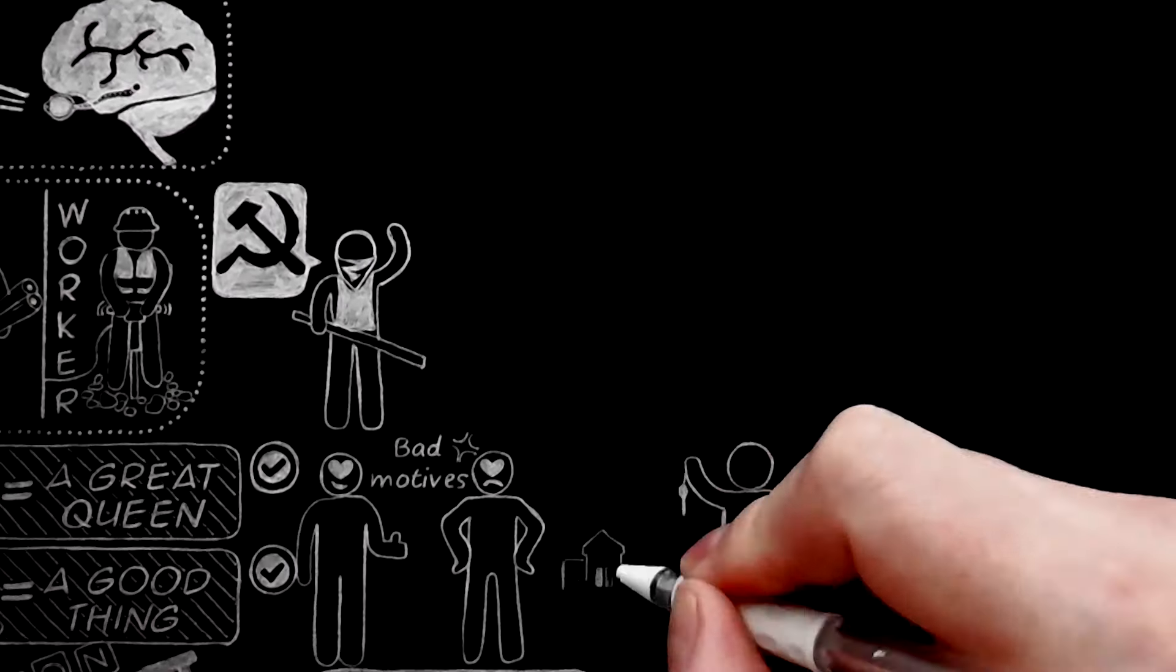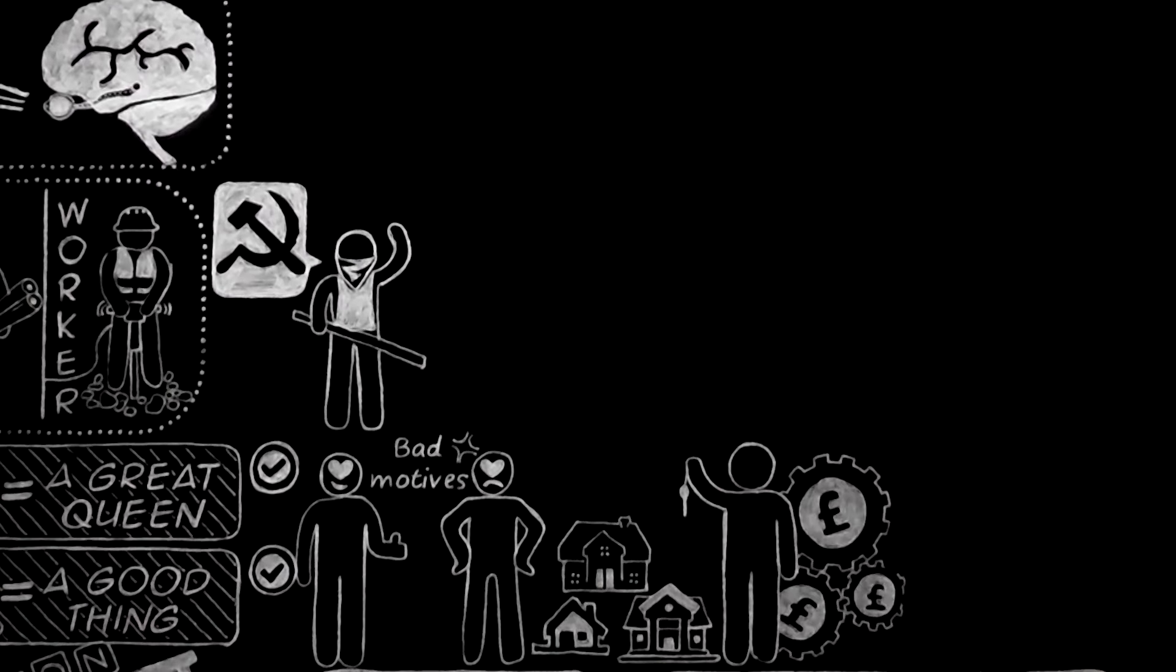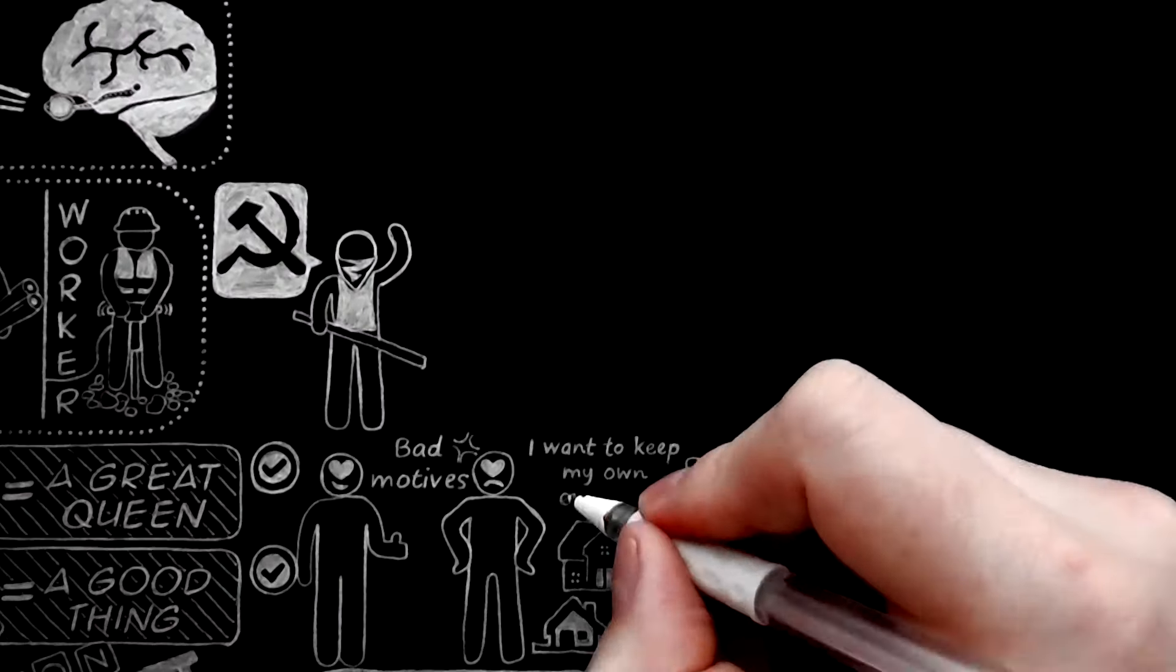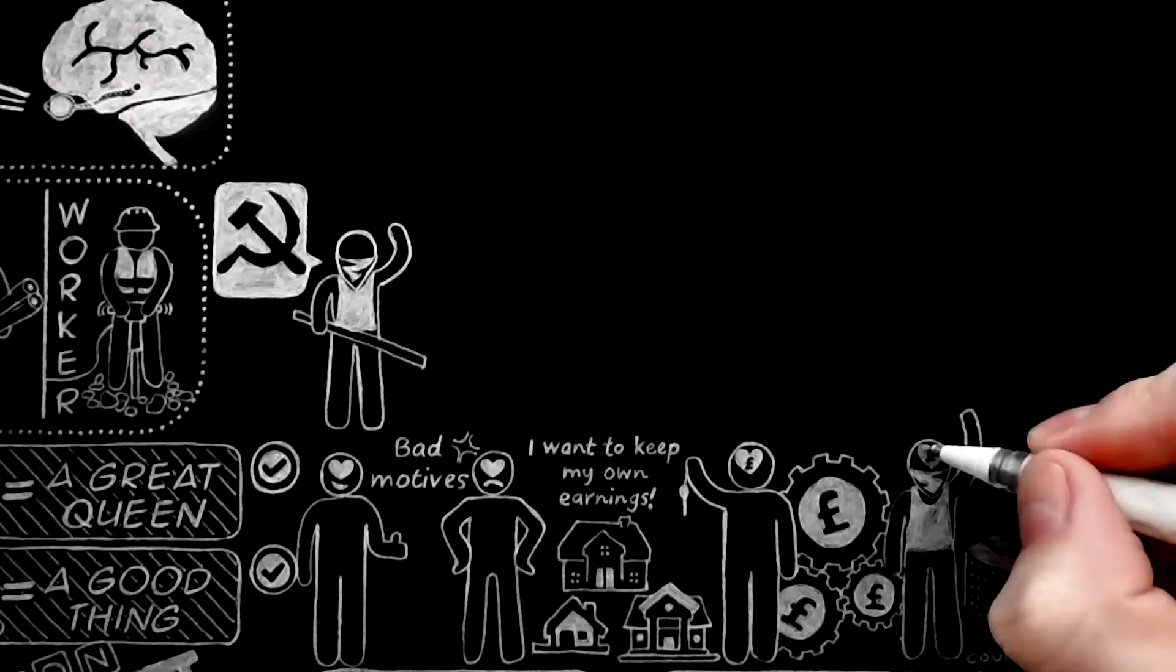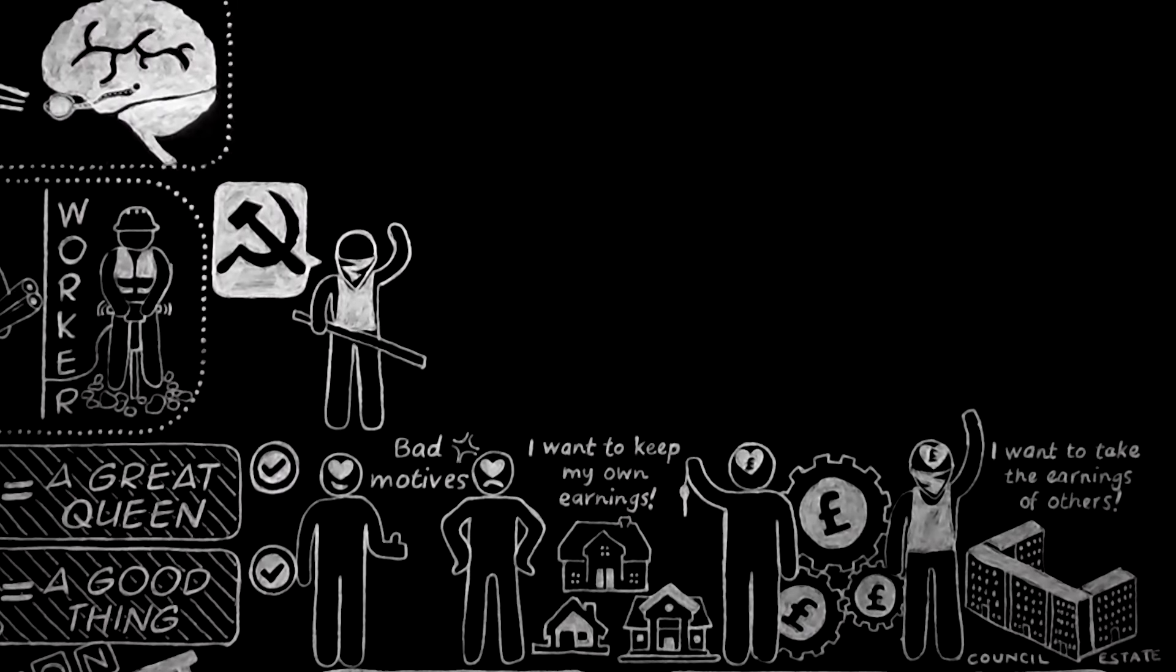The capitalists must be bad economists because we know why they want capitalism, and equally the communists must be bad economists because we know why they want communism. Thus the Bulverists on both sides.